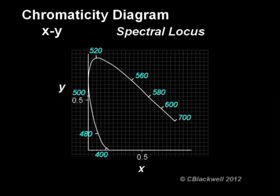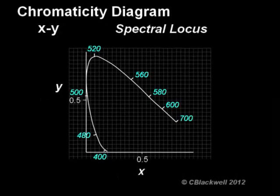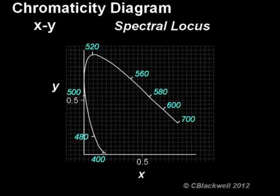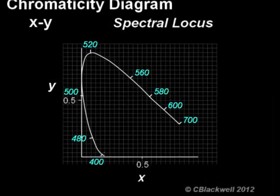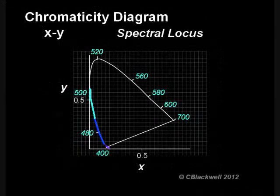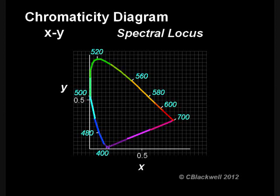Let's take a closer look at the diagram. The line around the outer edge represents the pure spectral colors with their wavelengths labeled, going from blue on the lower left, to green around the top, then yellow, and red on the lower right. The line that crosses the figure along the bottom is created using various mixtures of blue and red. These colors are not in the spectrum, which is why there are no wavelengths labeled. More about that in a moment.